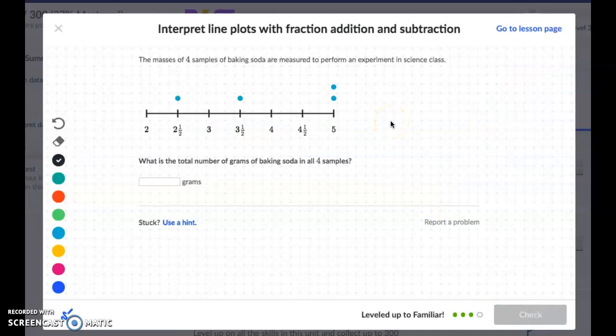The masses of four samples of baking soda are measured to perform an experiment in science class. So here are the four samples of baking soda. What is the total number of grams of baking soda in all four samples? Excuse me. So first I look here and I see these two are both 5. So I can do that. That's 10.